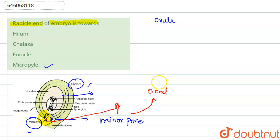And this minor pore helps in the facilitation of entry of oxygen and water during germination.